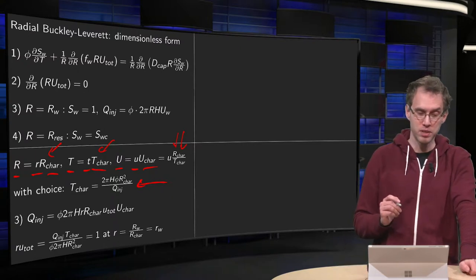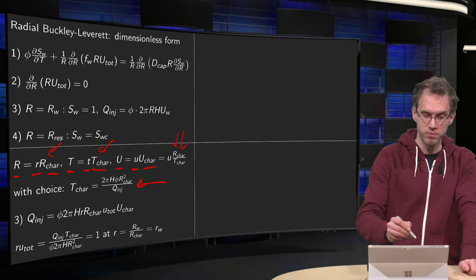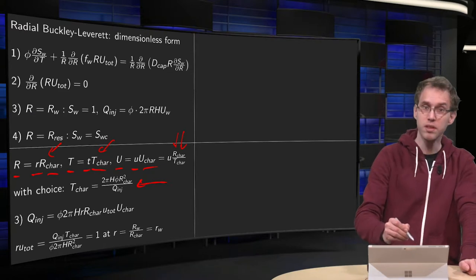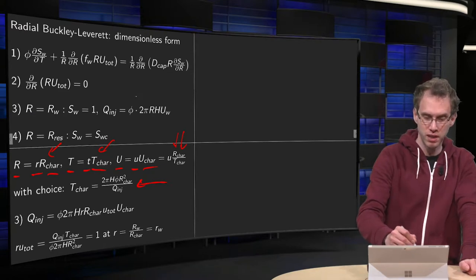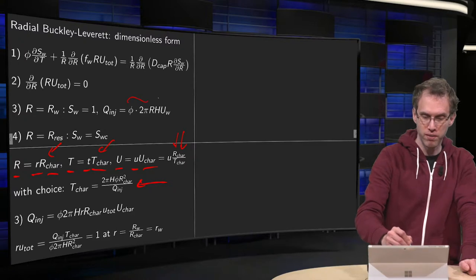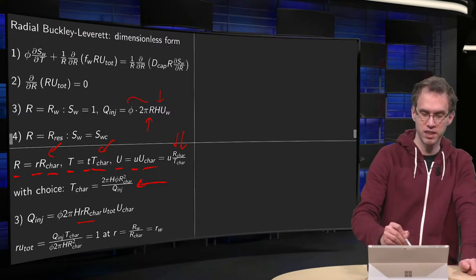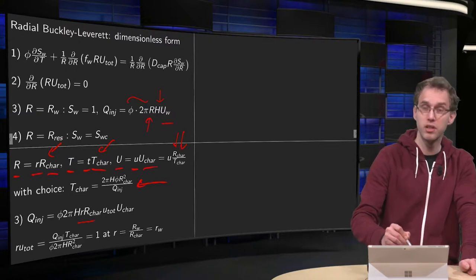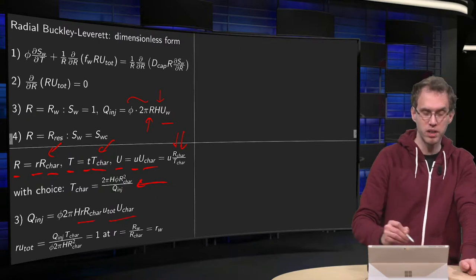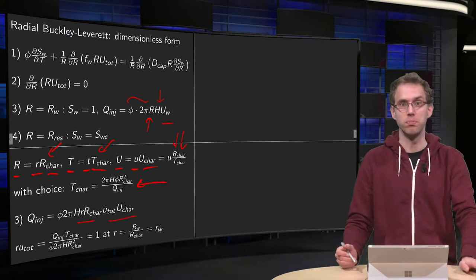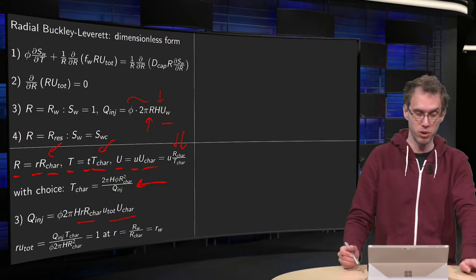So, what happens if you do this, for example, for Q-inject? What do we have for Q-inject? We just leave the phi and the 2 pi, we leave the H. But we have a capital R equals small R times R-characteristic. And capital U equals small U times U-characteristic. And in the injection point, UW is the same as U-total.